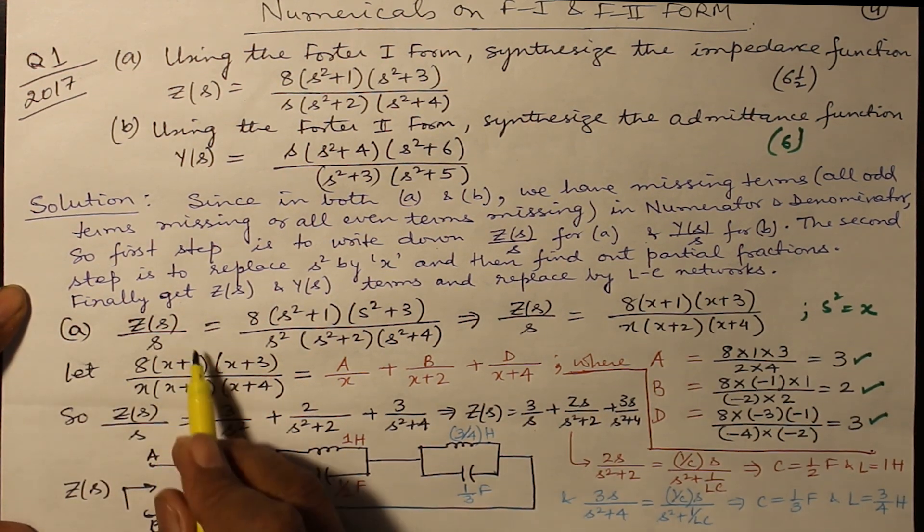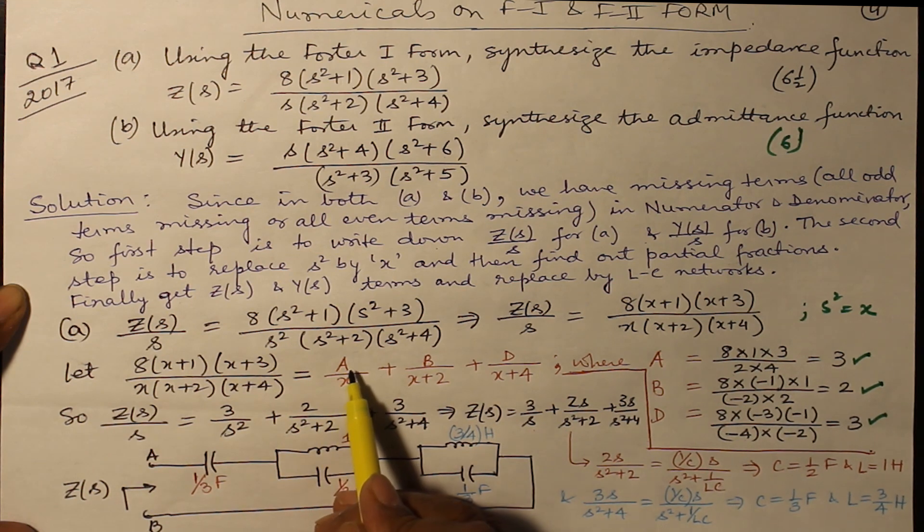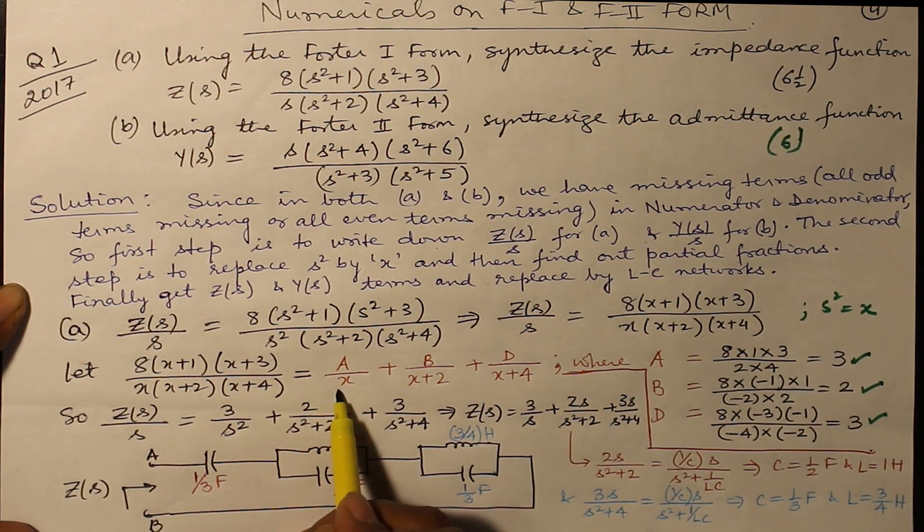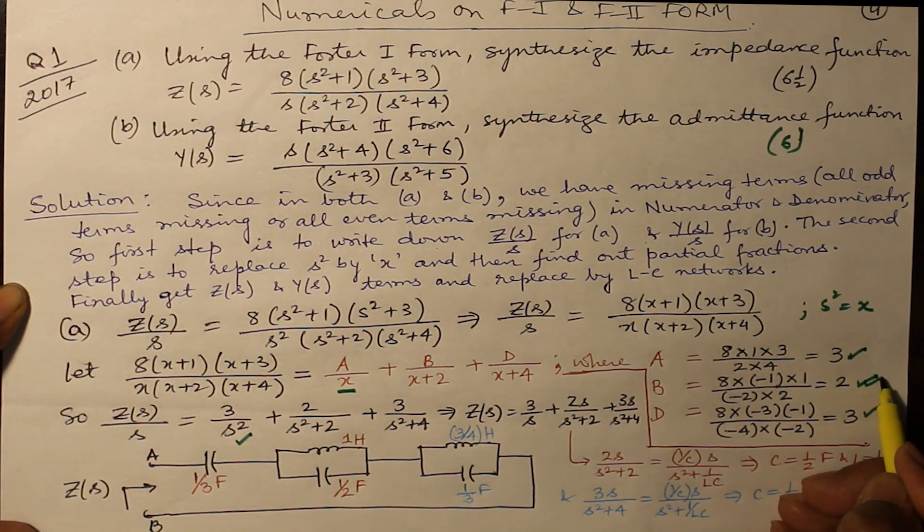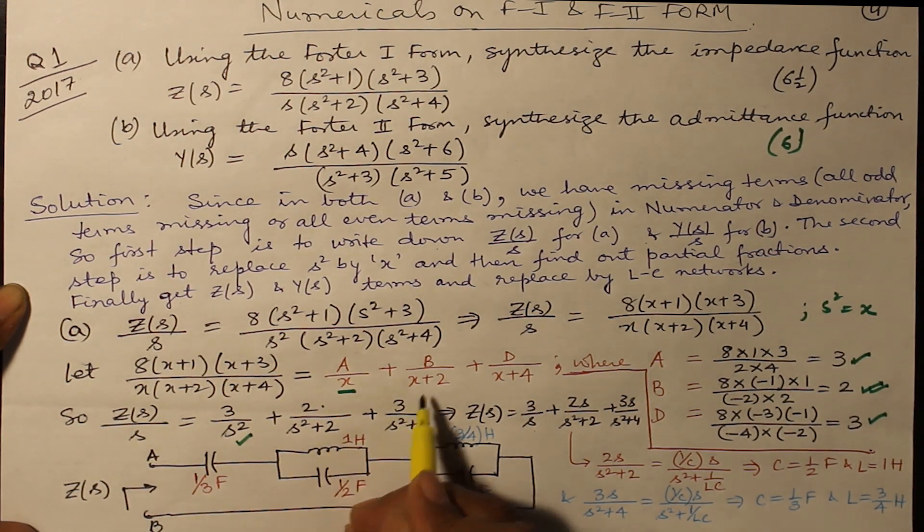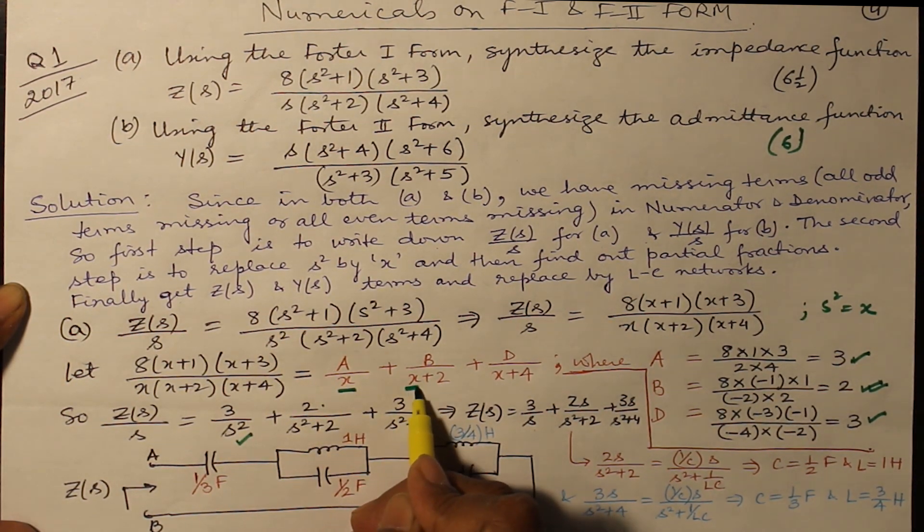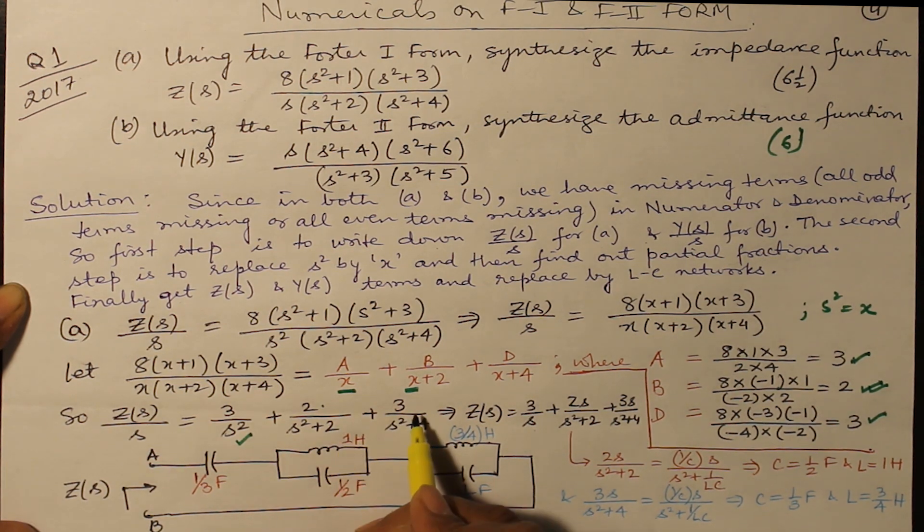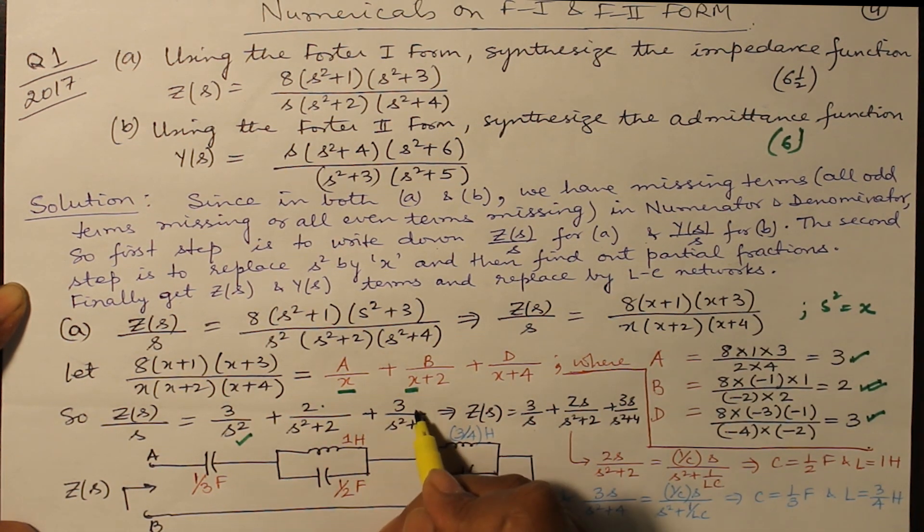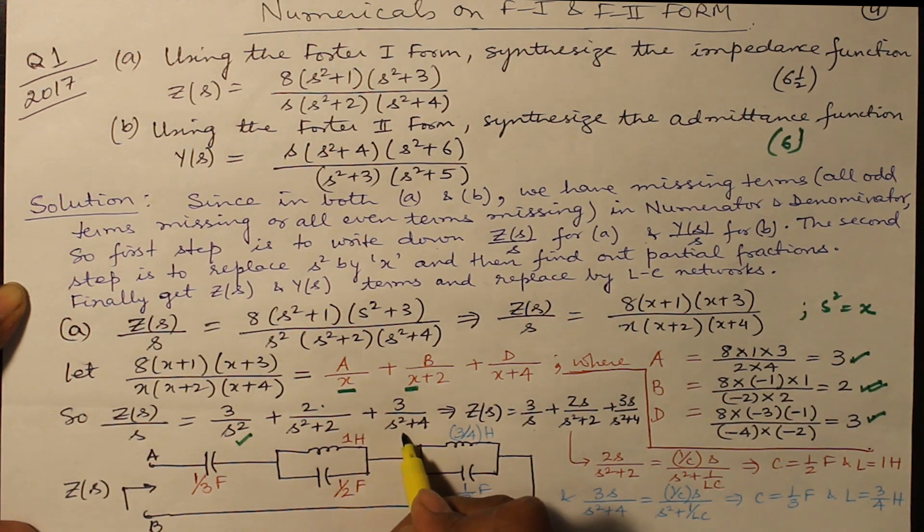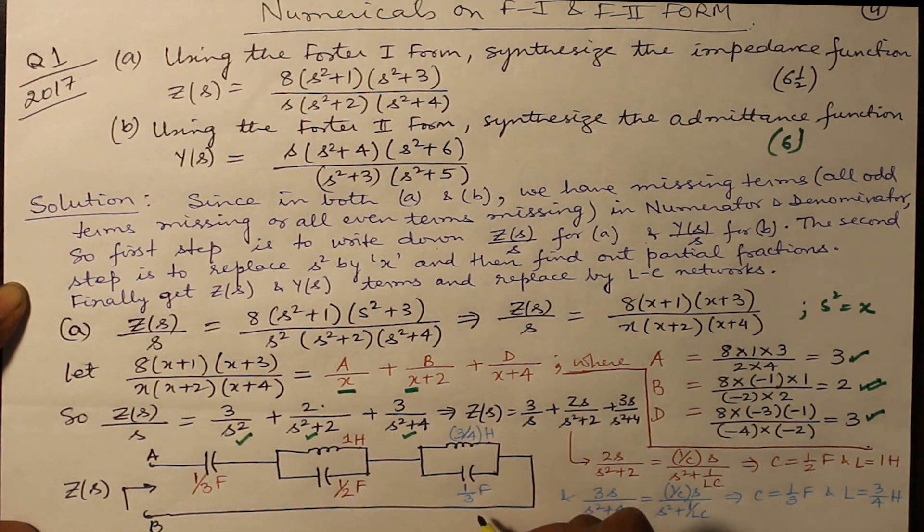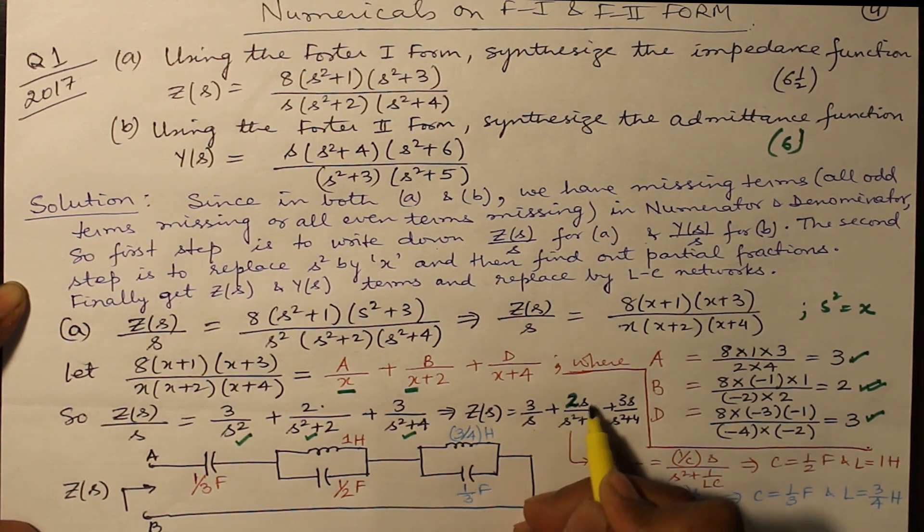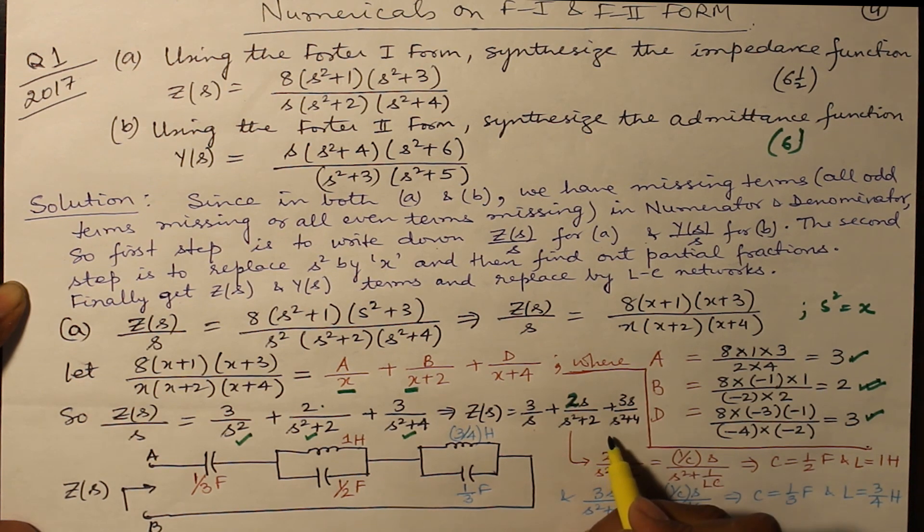Substitute these values back. So Z(s) over s becomes 3/x, and what is x? s². Plus 2 over s²+2. x is s². s²+2. And third one, 3 over s²+4. Multiply throughout by s. You get Z(s) equal to 3/s + 2s/(s²+2) + 3s/(s²+4).